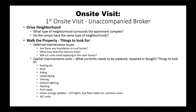You need to compare the exterior conditions to the comparables. Check whether AC units are old and will need replacing soon. Also look for capital improvement costs — what currently needs to be replaced, repaired, or purchased. Key items to assess include: the parking lot, roofing, siding, landscaping, fencing, exterior lighting, painting, pool repair, green energy updates such as LED lights and low-flow toilets, and whether AC units need immediate replacing.